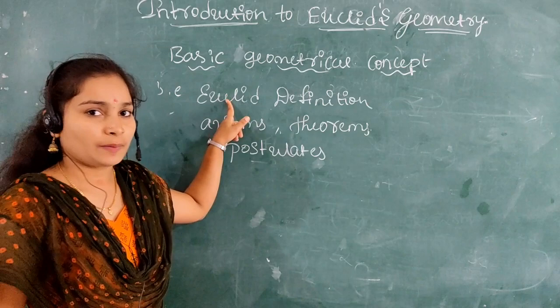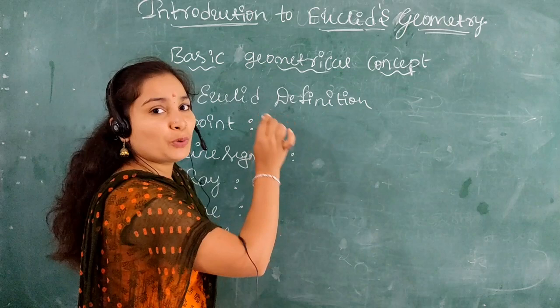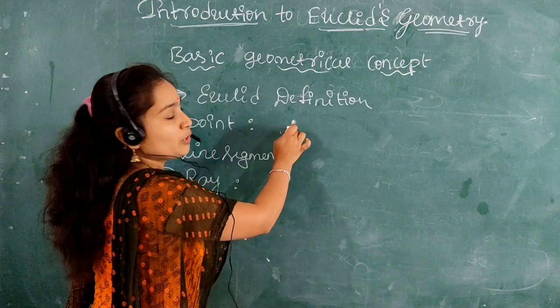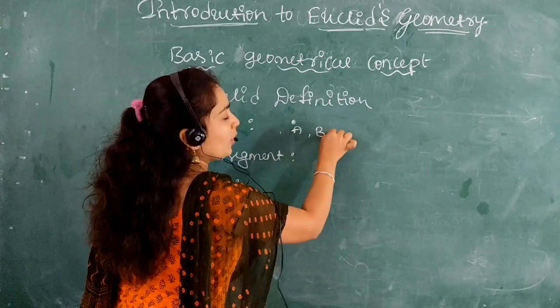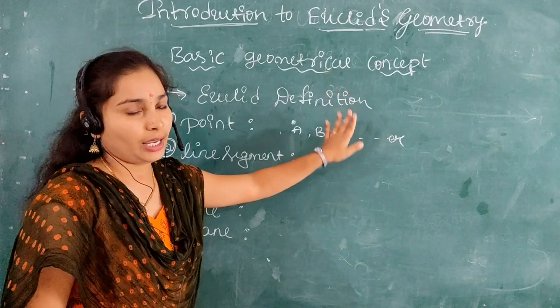Let us discuss Euclid Definitions. The first one is point. A point is an exact position or location — you can take one dot, and this dot is represented as a point. We denote a point using capital letters like A, B, C, and so on.